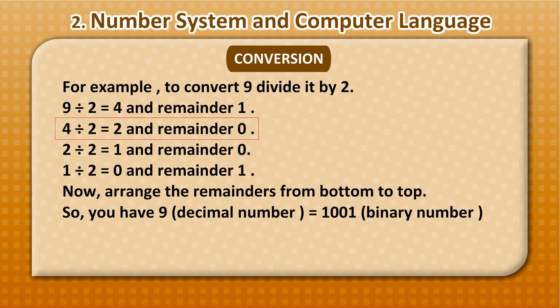4 divided by 2 equals 2 with remainder 0. 2 divided by 2 equals 1 with remainder 0. 1 divided by 2 equals 0 with remainder 1. Now, arrange the remainders from bottom to top. So, you have 9 decimal number equal to 1001 binary number.